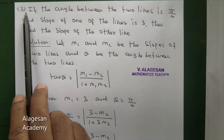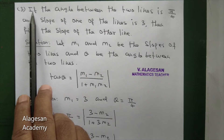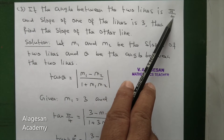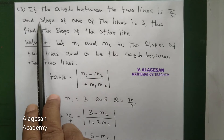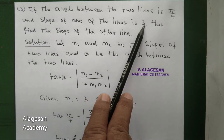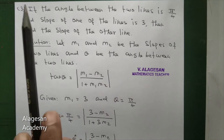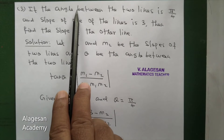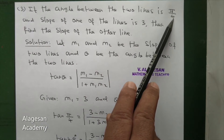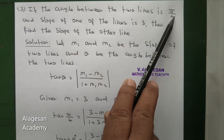Hi students, see question number 3. If the angle between the two lines is π by 4 and the slope of one of the lines is 3, then find the slope of the other line. The given angle between the two lines is π by 4, which is 45 degrees.